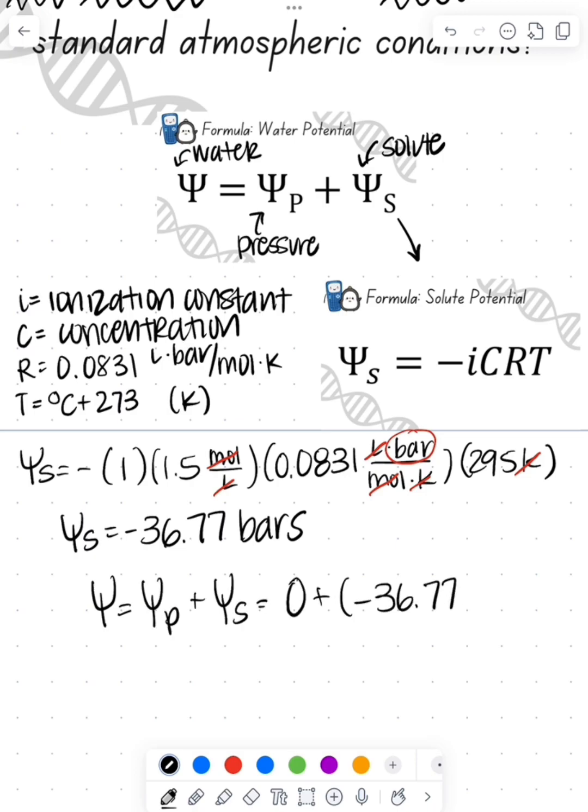Now our pressure potential is going to be zero because we're not pushing on the solution or pulling from the solution. So that gives us an overall water potential of negative 36.77 bars.